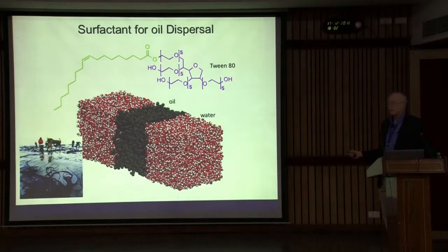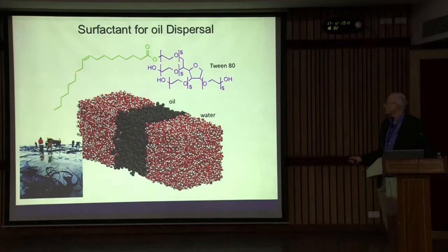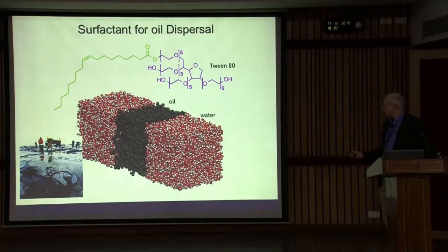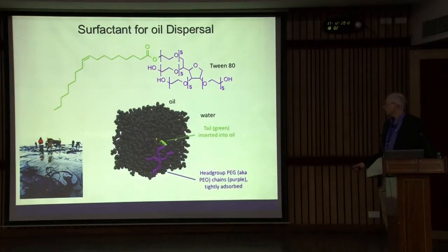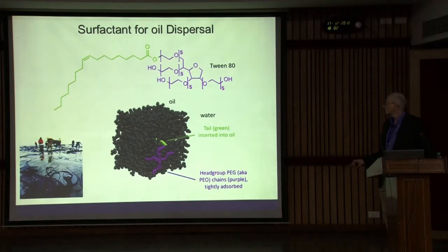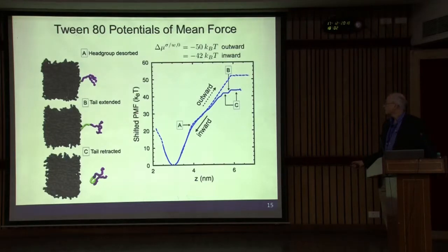We wanted to understand what controls adsorption and desorption of surfactant from the interface. We start with atomistic simulations. The surfactant used is Tween 80 — a commercial surfactant with a long primarily alkane tail and a PEO head group organized around a sorbitan ring. If we make the waters invisible, you see the tail embedded in the oil and the head group sprawled out over the interface. To determine how long this stays on the interface, we obtain the potential of mean force using WHAM, and we get an enormous free energy of around 50 kT for this to come off the interface.